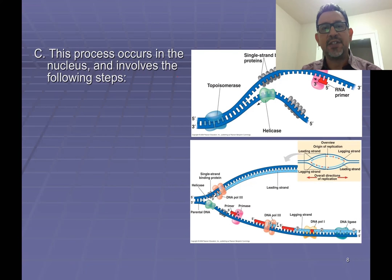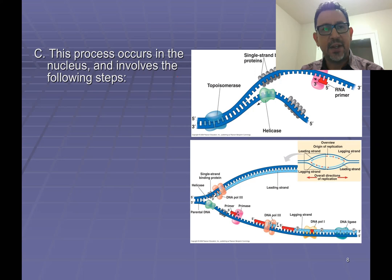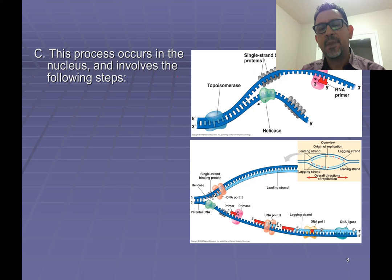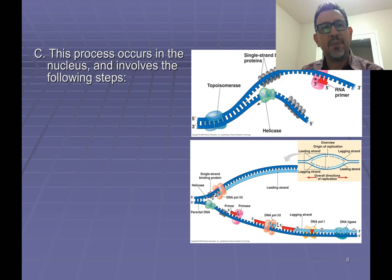Therefore, we can say with confidence that DNA replication is a process that takes place inside of the nucleus. A second concept about DNA one has to keep in mind is that the reason cells duplicate their DNA through DNA replication is to ensure that when cells divide, each of the daughter cells made during cell division receives a complete and faithful set of genetic instructions.